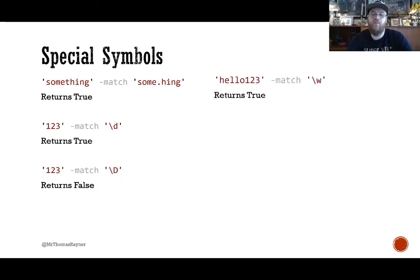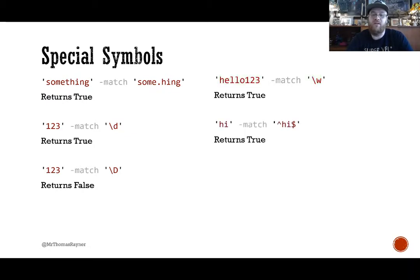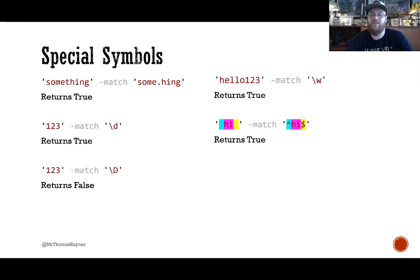Word characters — those are numbers, letters, and underscores — this returns true; we found a whole bunch of matches. The caret symbol, shift-six on a lot of keyboards, represents the start of a string, and the dollar sign represents the end of a string. In this case, we've got the beginning of a string, the letters 'hi', and then the end of the string — and we found that pattern there.